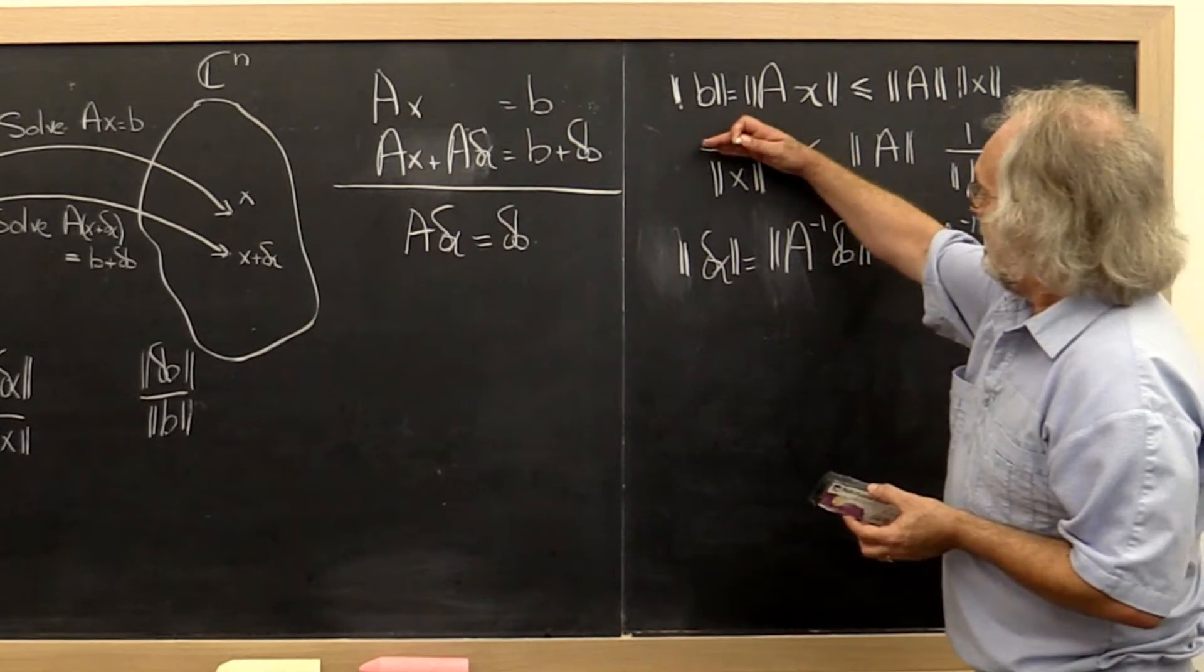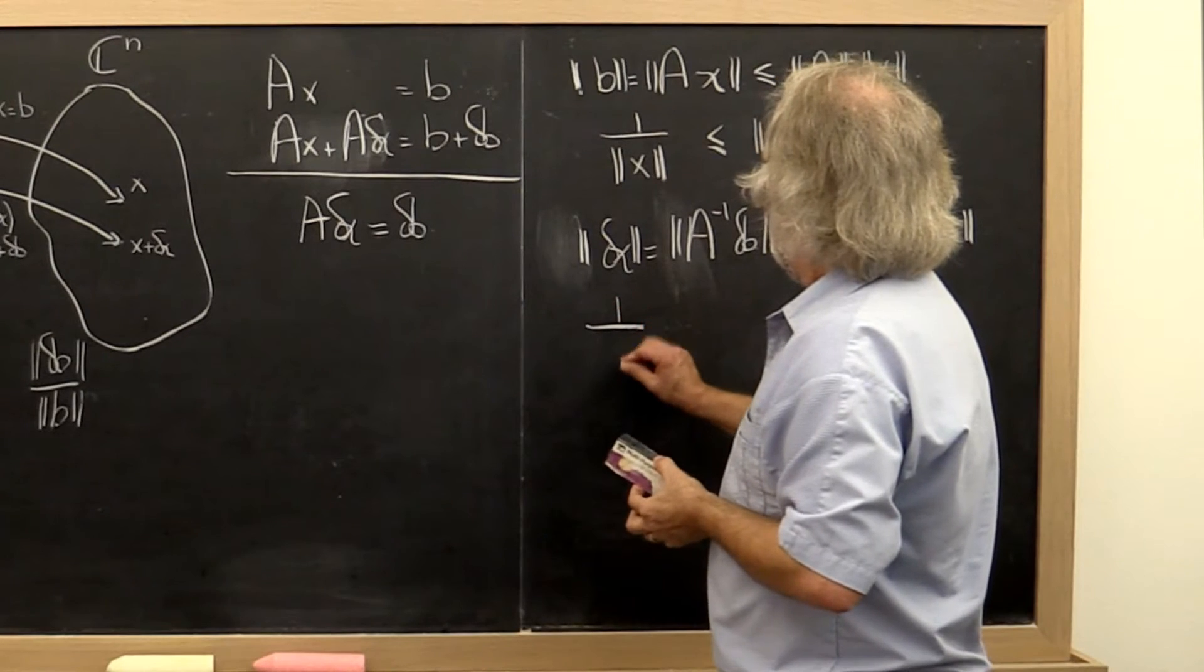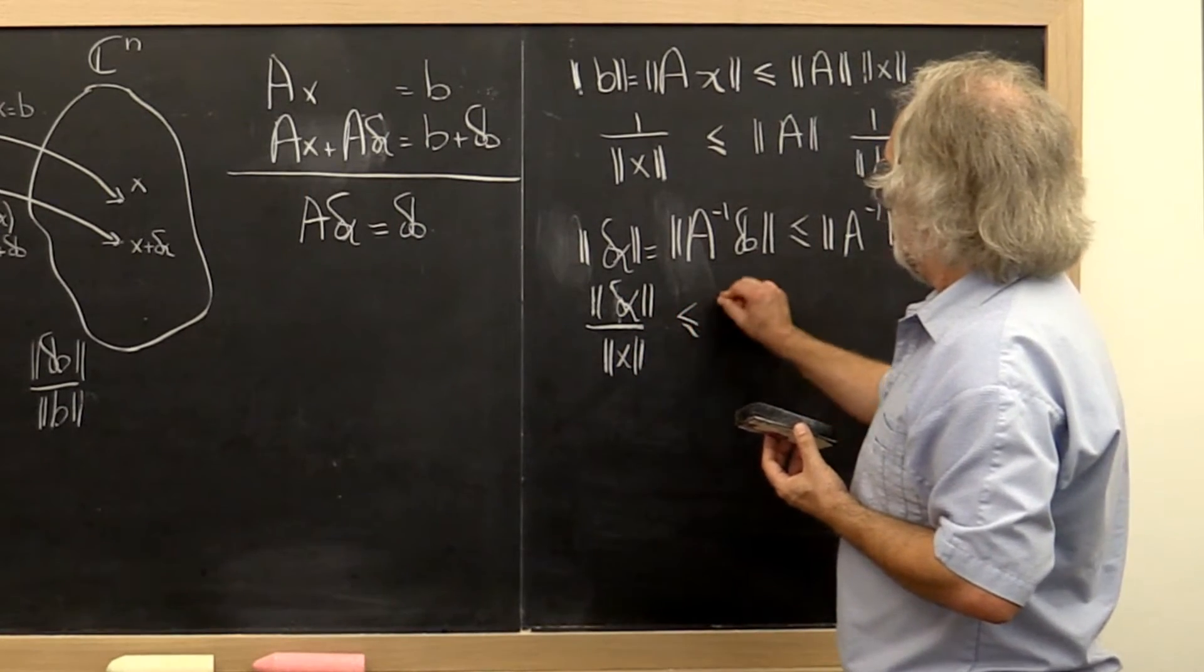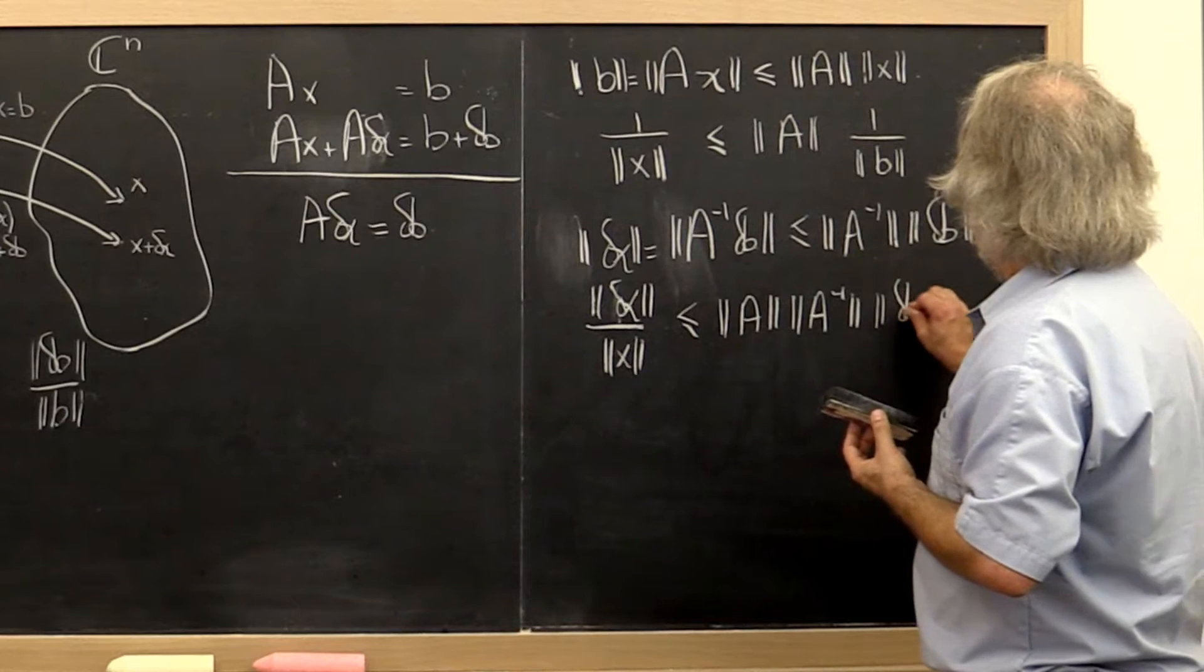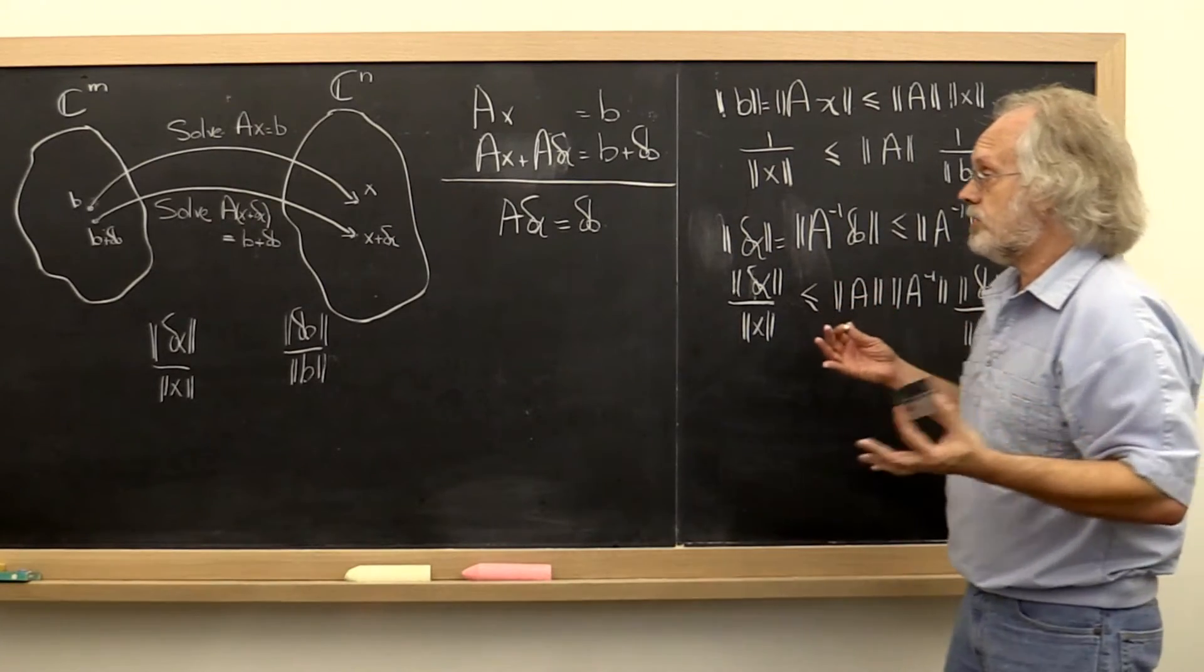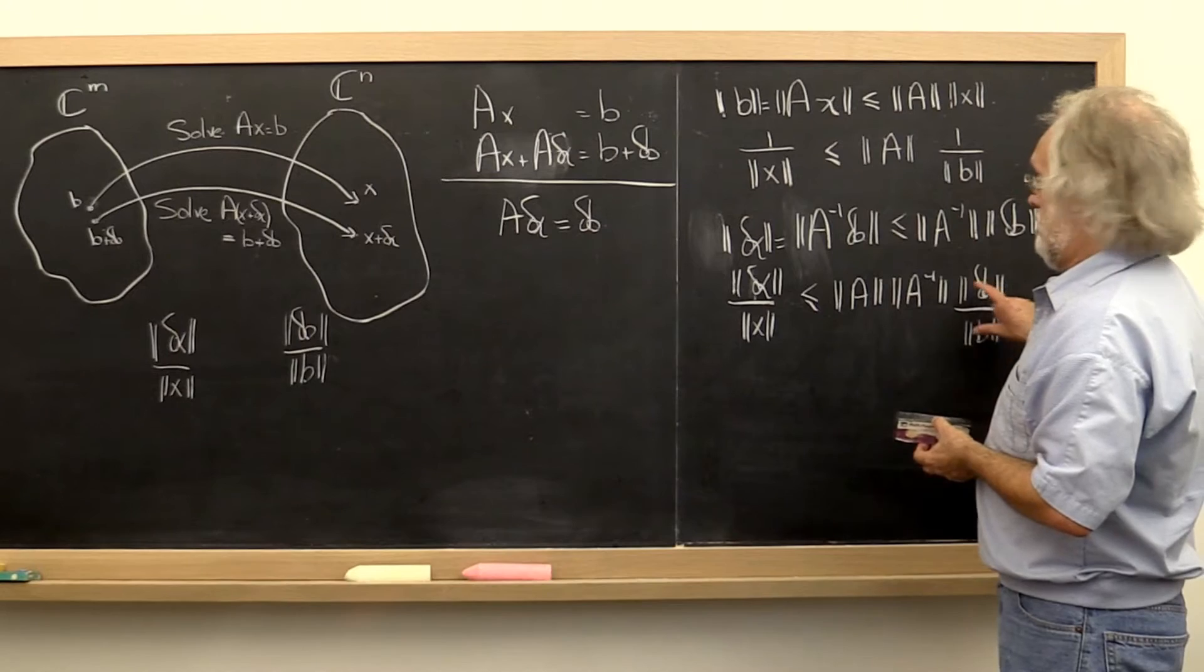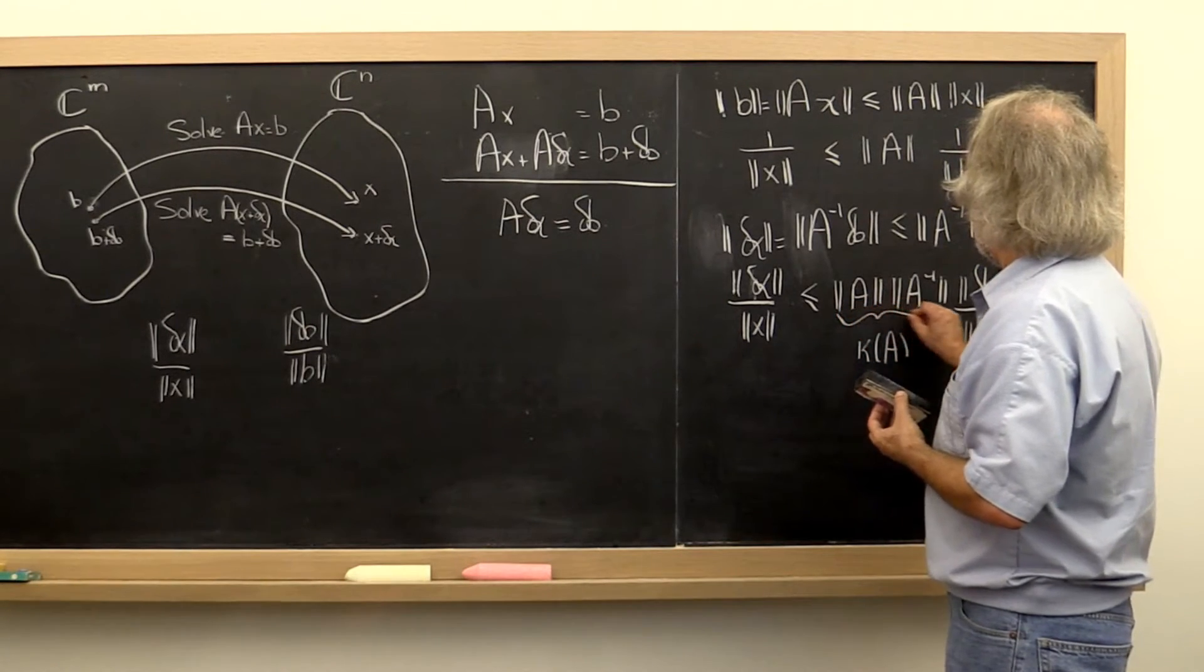Now multiply these inequalities, and we get that the norm of delta x over the norm of x, the relative error in x, is bounded by the norm of A times the norm of A inverse times the relative error in B. So we now have answered our question. The small error in B can be amplified no more than this quantity, which we call the condition number of matrix A. Obviously this condition number depends on which norm you chose.